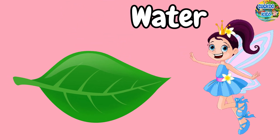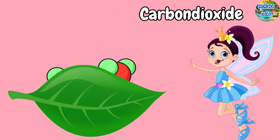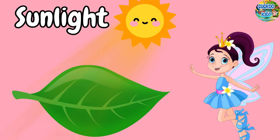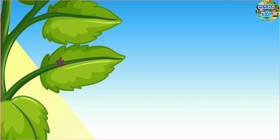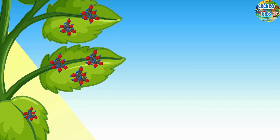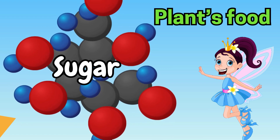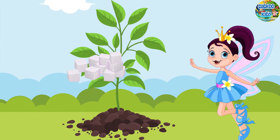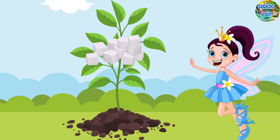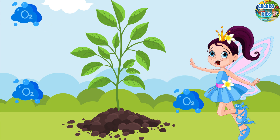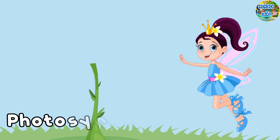These pigments take in water, carbon dioxide, and sunlight, and turn them into sugar, which is known as the plant's food. The sugar is used by the plant as their food, and the oxygen produced by the plants is given out. This process as a whole is called photosynthesis.